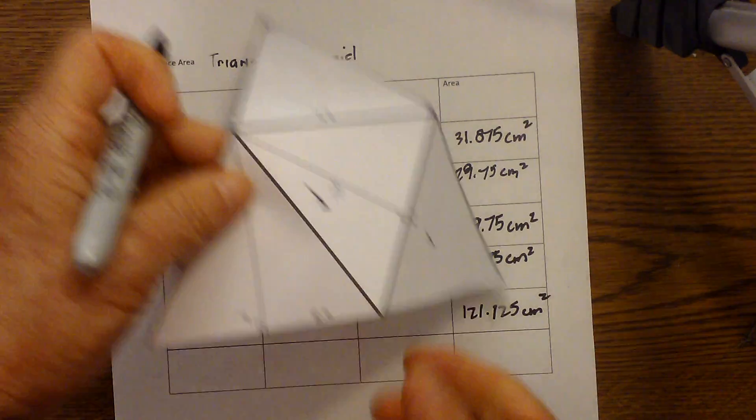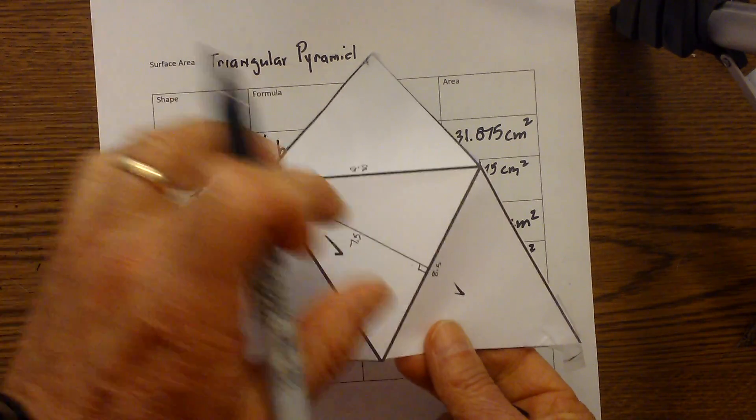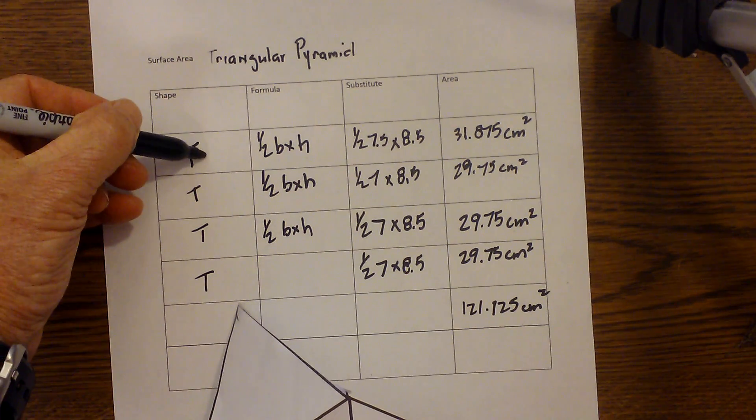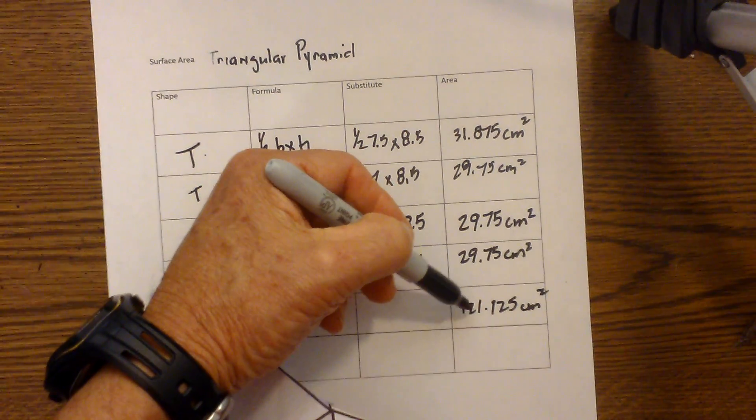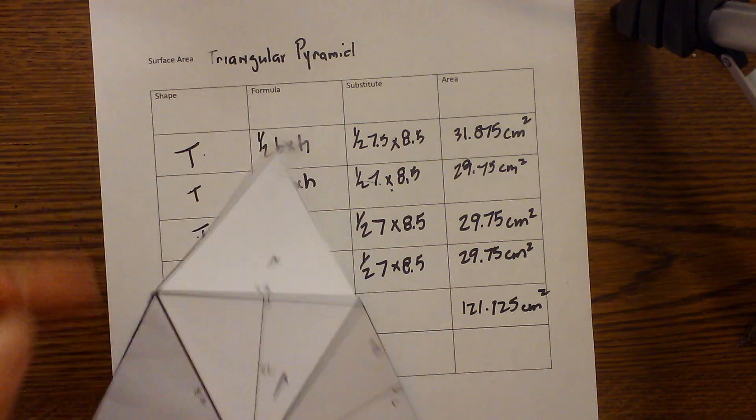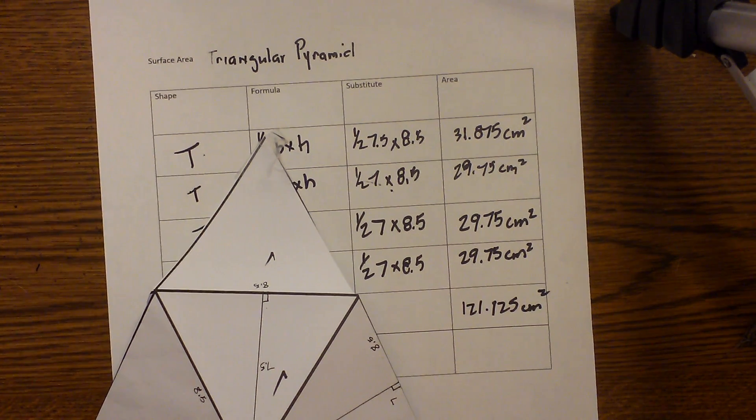So again, let me recap here. Here is the triangular pyramid—four triangles. The one in the middle is slightly larger. So here is the base, here are the three sides. Total all this up for 121.125 centimeters squared. I hope that helps in finding the surface area of a triangular pyramid. Thanks for watching. MooMooMath uploads a new math and science video every day. Please subscribe and share.